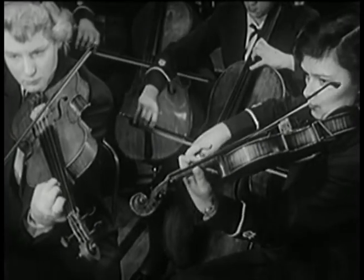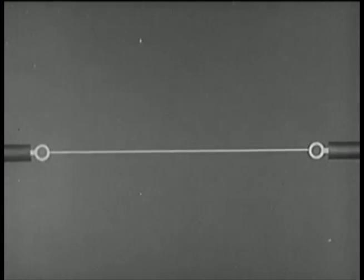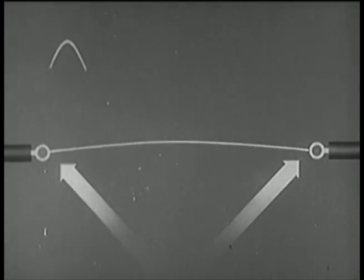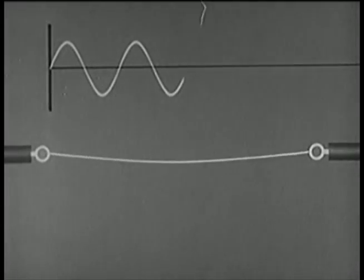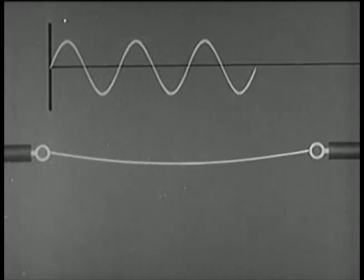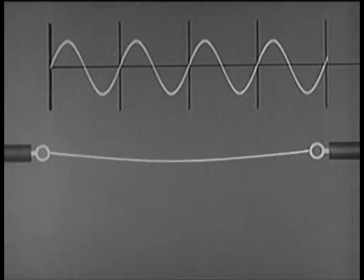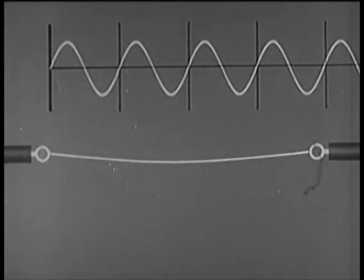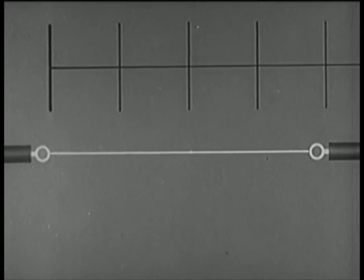To explain some of the reasons for this, let us observe this string. Here, there is no motion at these endpoints or nodes. The string vibrates along its full length and produces its longest possible wavelength. This is the lowest or fundamental frequency of the string, sometimes called the first partial.